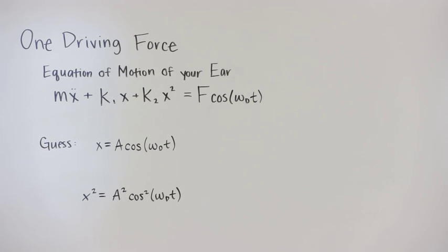This term provides cosine of two omega drive t, plus a rectification term, derived from trig and complex analysis. This shows that if an ear is driven at omega drive, the non-linearity of the cochlea will cause a tone at two omega drive to be heard.